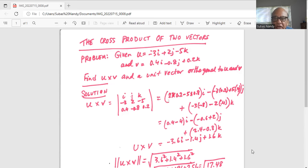And next one for j we eliminate the first row second column. We are left with minus 3, 0.4 and minus 5, 0.2. So it will be minus 3 times 0.2 and two minuses will make it plus 5 times 0.4.